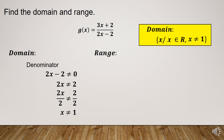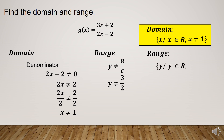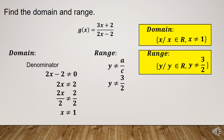For the range, we use y is not equal to a over c. Checking the given rational function, the value of a is 3 and the value of c is 2. Therefore, the restriction for range is y is not equal to 3 over 2. The range is the set of y such that y is an element of the real numbers, but y must not be equal to 3 over 2.